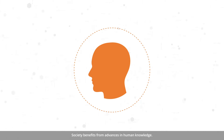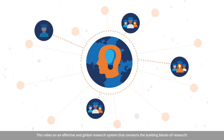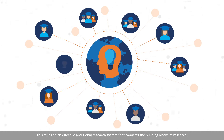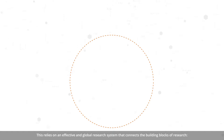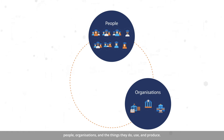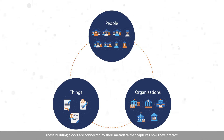Society benefits from advances in human knowledge. This relies on an effective and global research system that connects the building blocks of research: people, organizations, and the things they do, use, and produce. These building blocks are connected by their metadata that captures how they interact.